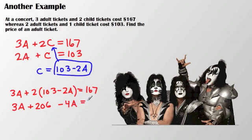So that I get 3a plus 2 times 103 minus 2a equals 167. Now, you might be a little panicked when you combine a's because you end up with a negative a, but that's alright. You'll see why in a moment.